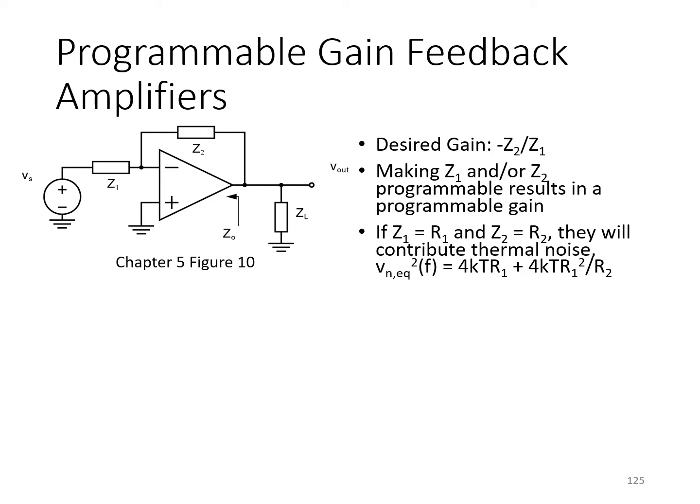Here's an example of a general inverting configuration that can be used to amplify relatively weak input voltage signals. For low noise amplifiers, we may need to handle a wide range of input voltage amplitudes, so therefore it's common to require the gain to be variable.